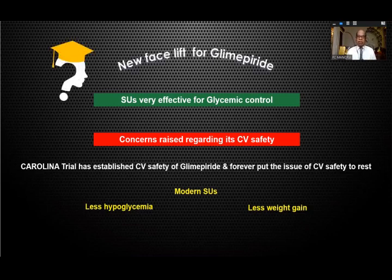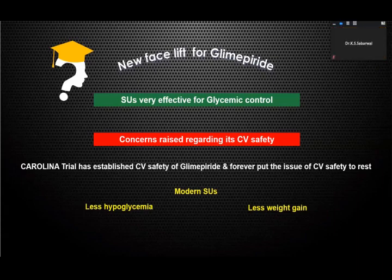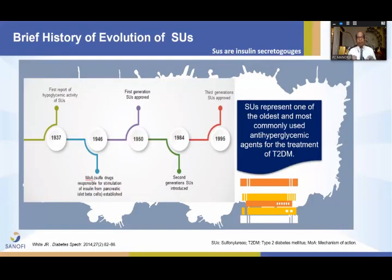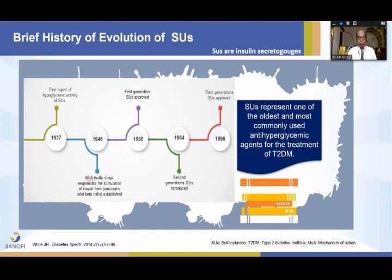So in the present time, there is a new facelift for modern sulfonylureas like glimipride. Despite the hype created by a panoply of new agents in the Indian context, sulfonylureas are still extensively used throughout the country. They represent one of the oldest and most commonly used anti-hyperglycemic agents. In 1937 the first report of hypoglycemic activity of sulfonylureas was discovered, in 1946 the mechanism of action — stimulating insulin secretion — was established, and in 1950 the first generation sulfonylureas were approved for clinical use.